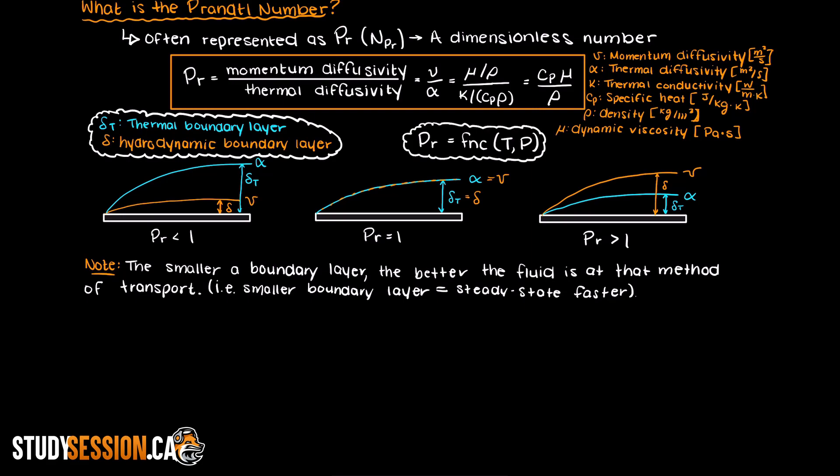As you can see at higher Prandtl numbers we have greater momentum transfer than thermal transfer, and at low Prandtl numbers we have greater thermal transfer than momentum transfer. In summary, we use the Prandtl number to characterize a fluid's transport mechanics, meaning how it will behave when we have both momentum and thermal transfer present.